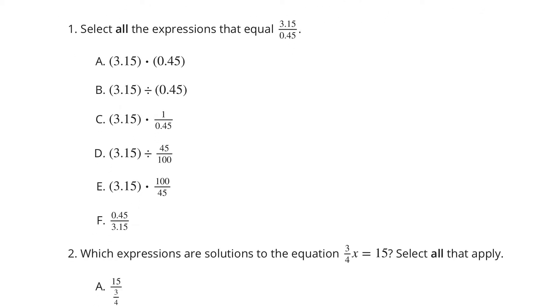Select all expressions that are equal to 3 and 1,500ths over 4,500ths. In other words, 3 and 1,500ths divided by 4,500ths. It's not A, but it is B. It also is C. Now, 4,500ths, that's the same thing as 0.45, right? So D works as well.